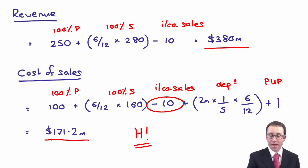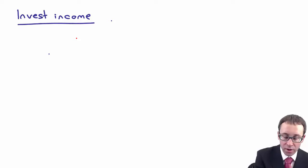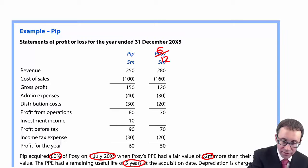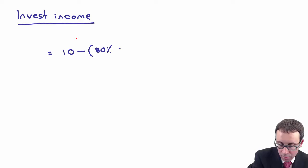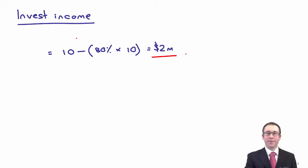Other one that you've got is looking at the investment income figure, wasn't it? So what you have there with regards to your investment income figure is, I think we started off with 10. Yep, we've got that figure of 10 there within the parent's column. But don't forget, within there is P's share. So is that 80% there of S's dividend, isn't it? So if S, so Posy, paid a dividend of 10 million, then 80% of that will be recorded in the parent's books. So that should therefore leave 2 million. There we go. So that's the investment income figure that will be within the group accounts.